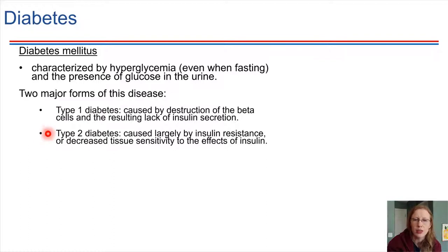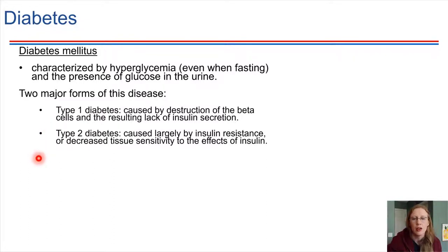Type 2 diabetes is far more common. It's caused by insulin resistance — insulin may be present, but the target cells are just not as receptive to it as they should be.